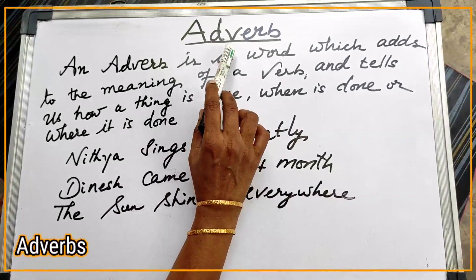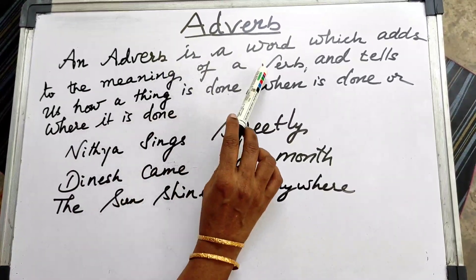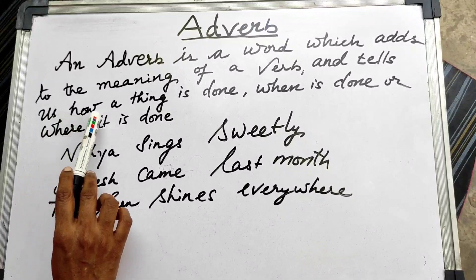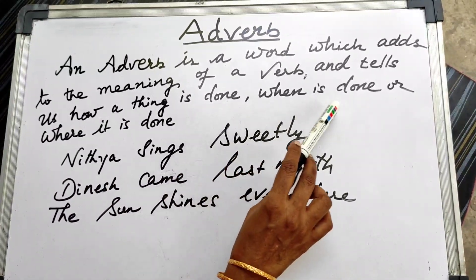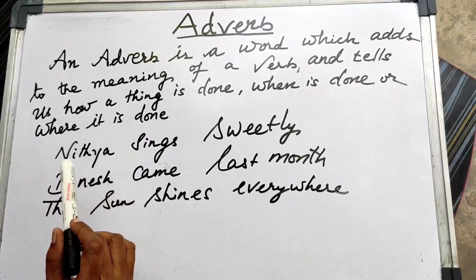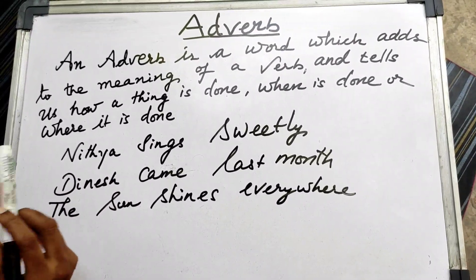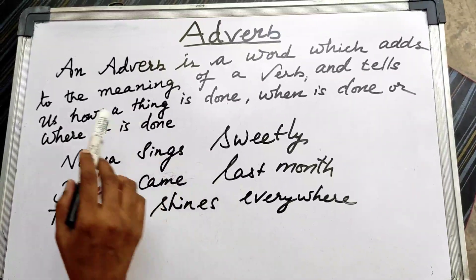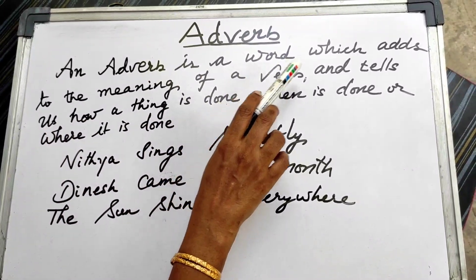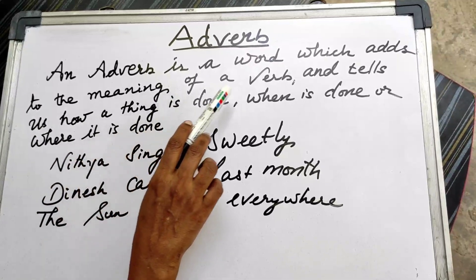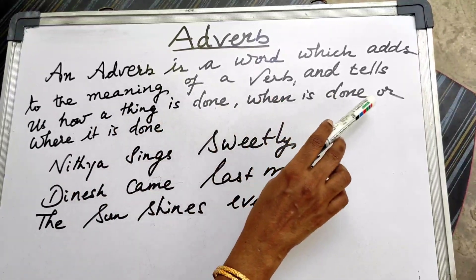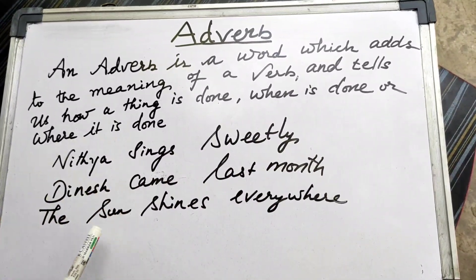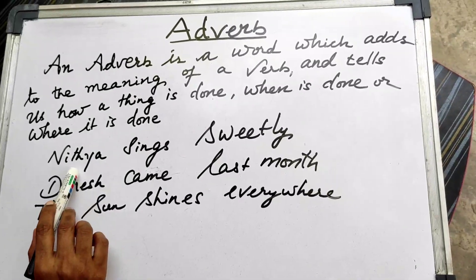Let us see what an adverb is. An adverb is a word which adds to the meaning of a verb and tells us how a thing is done, when it is done, and where it is done. So an adverb is a word which qualifies the verb — it gives add-on information about the verb.